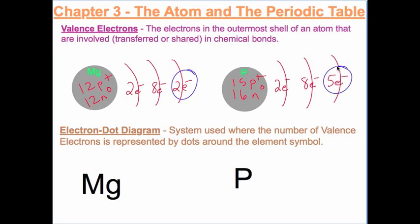Valence electrons are very important — they get their own system called electron dot diagrams. This system is used to show the number of valence electrons alongside the element's symbol. We draw one dot for each valence electron, so magnesium has two valence electrons and we put two dots.